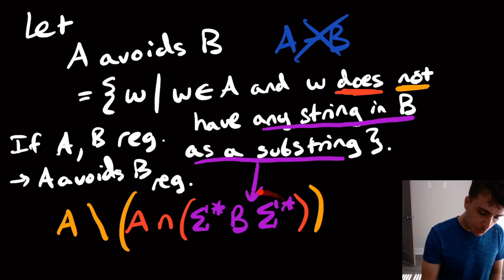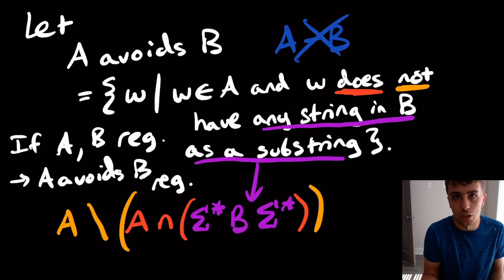Well, assuming that this part is regular, A itself is regular by assumption. So A intersection something, that is regular by the product construction. And we know regular languages are closed under intersection. So this part is regular, the part in the red. What about the part in the orange?